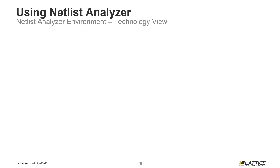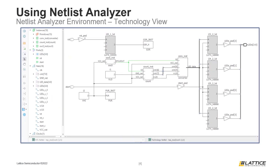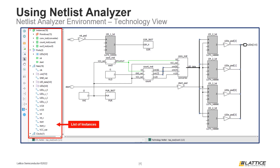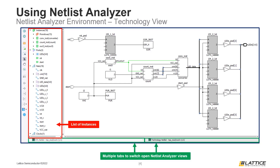An example of Netlist Analyzer's Technology view can be seen from the figure on the slide. The sections in this view are similar to those in RTL view. The main section of the window displays the synthesized design in terms of technology components, helping users better understand how their design will be implemented on an actual device. On the left side are the list of instances; there will be more instances in Technology view because it is more detailed and displays more components than RTL view.